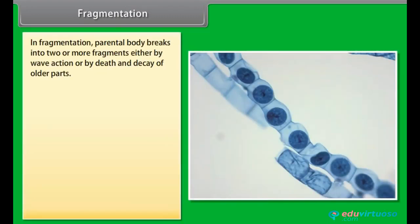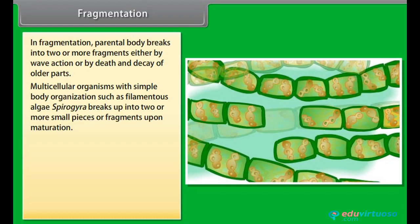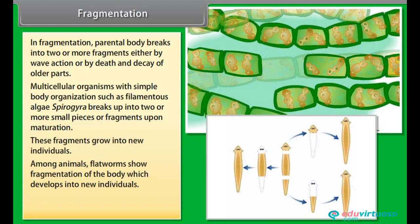In fragmentation, the parental body breaks into two or more fragments either by wave action or by death or decay of older parts. Multicellular organisms with simple body organization, such as filamentous algae like Spirogyra, break up into two or more small fragments. Upon maturation, these fragments grow into new individuals. Among animals, flatworms show fragmentation. Fragmentation is also found in algae such as Spirogyra.